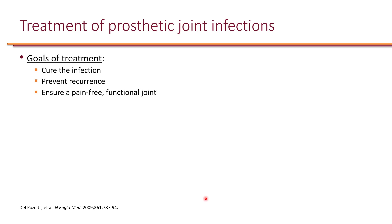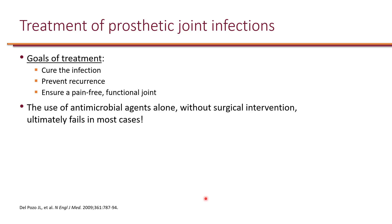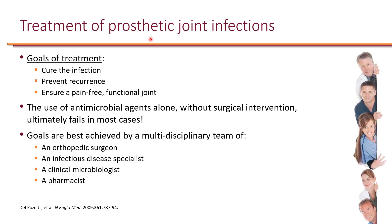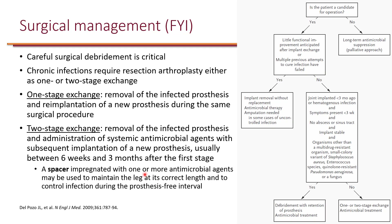For prosthetic joint infections, the goal of therapy is to cure the infection and prevent recurrence, but also to ensure a pain-free and functional joint. The use of antimicrobial agents alone without surgical intervention is often unsuccessful because of the presence of a foreign object — source control becomes extremely important. Therefore, the goals are best achieved by a multidisciplinary team of orthopedic surgeons, infectious disease specialists, a clinical microbiologist, and a pharmacist. Surgical intervention is key.